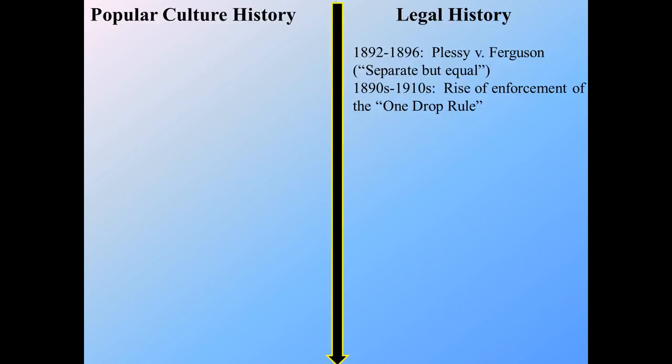The basis of this rule is that if one of your great-great-great grandparents was of African descent, you too were considered African-American. Of your great-great-great grandparents, there are 32 people.